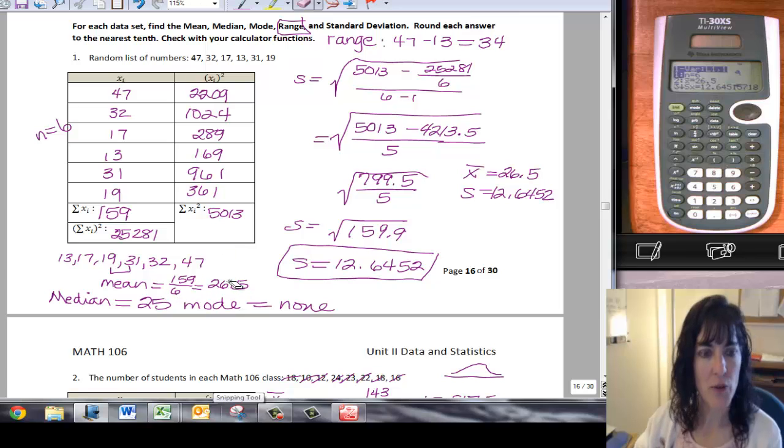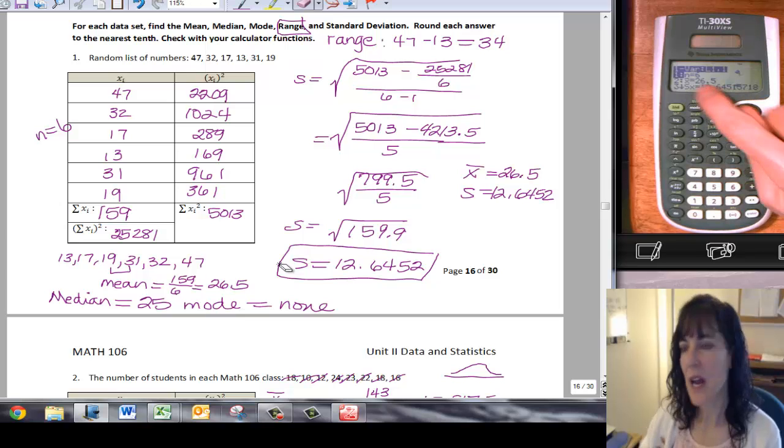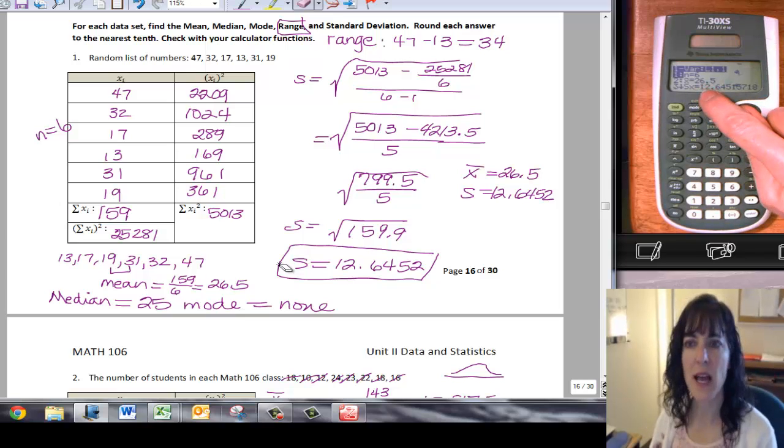And if I look over here, my mean right there was 26.5. So that matches. And then this sx, that represents my sample standard deviation, which is the little s that we've been using. And that's 12.64515.